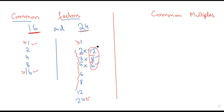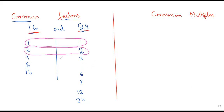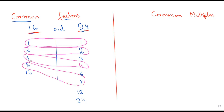You can ask me multiple times — I don't mind questions. The topic was to find the common factors of sixteen and twenty-four. One is common in every number. Then two is common. Four is also common. Eight is also a common factor. So the common factors of sixteen and twenty-four are one, two, four, and eight. We are not finding HCF here — just the common factors.